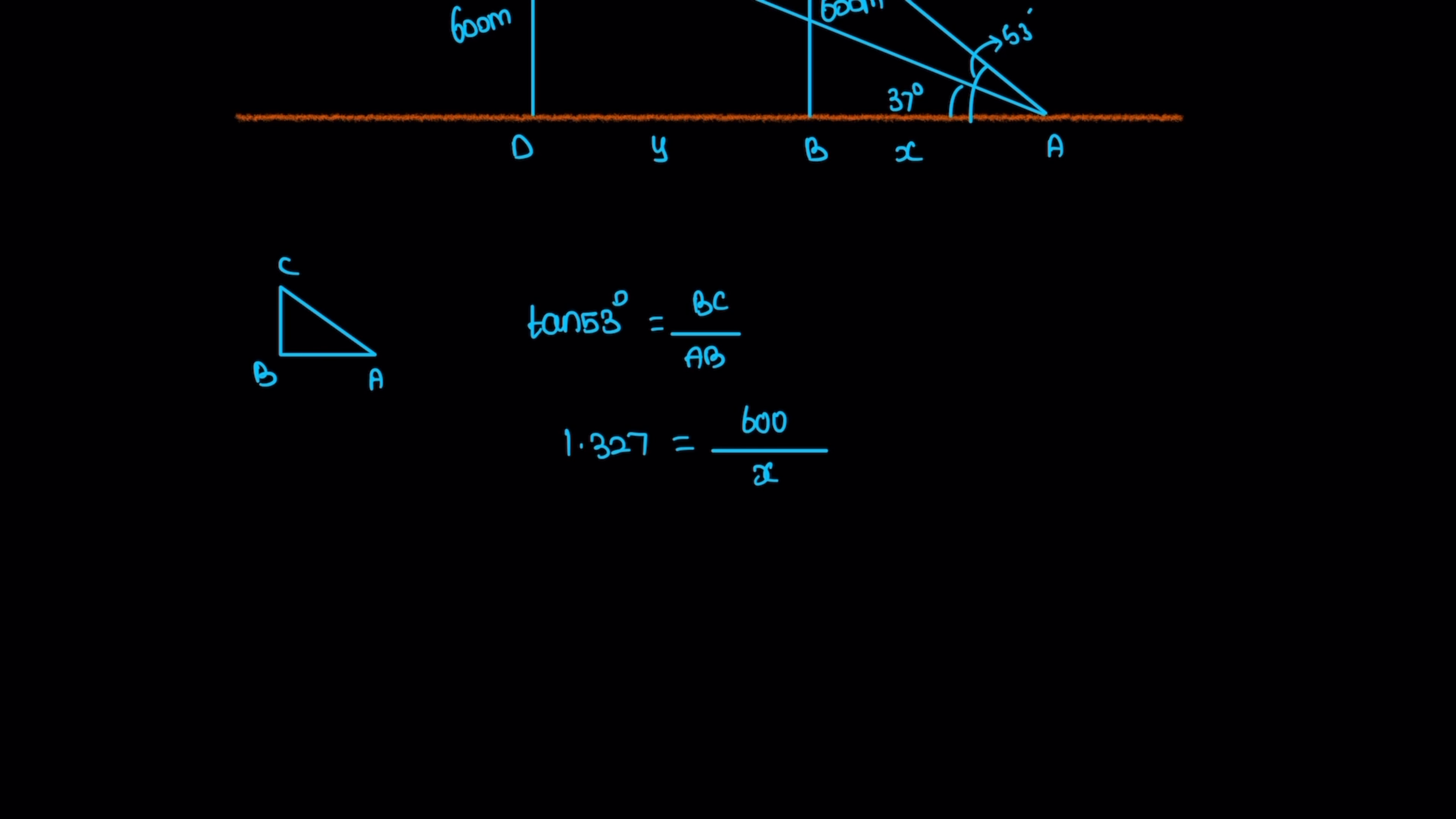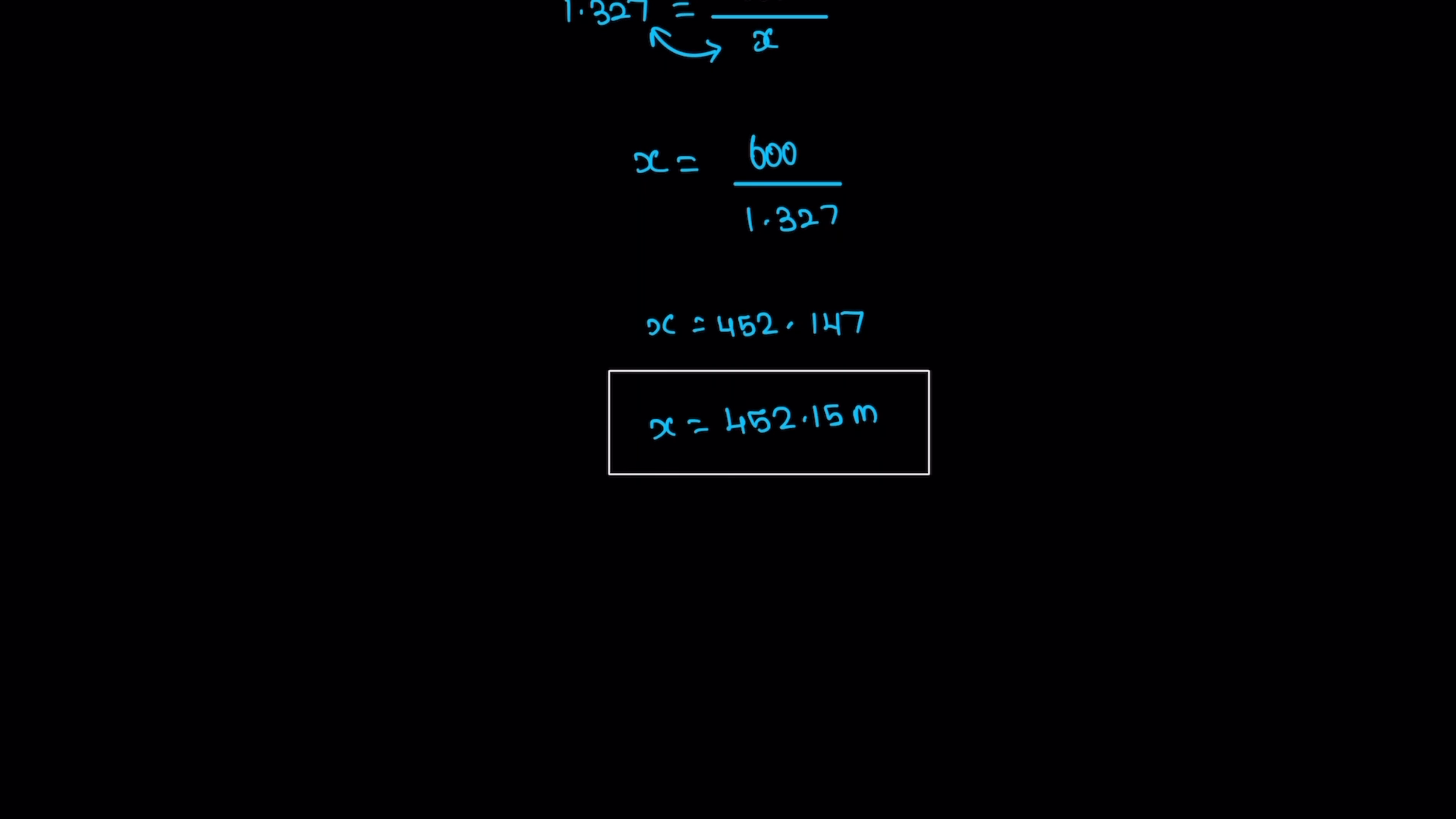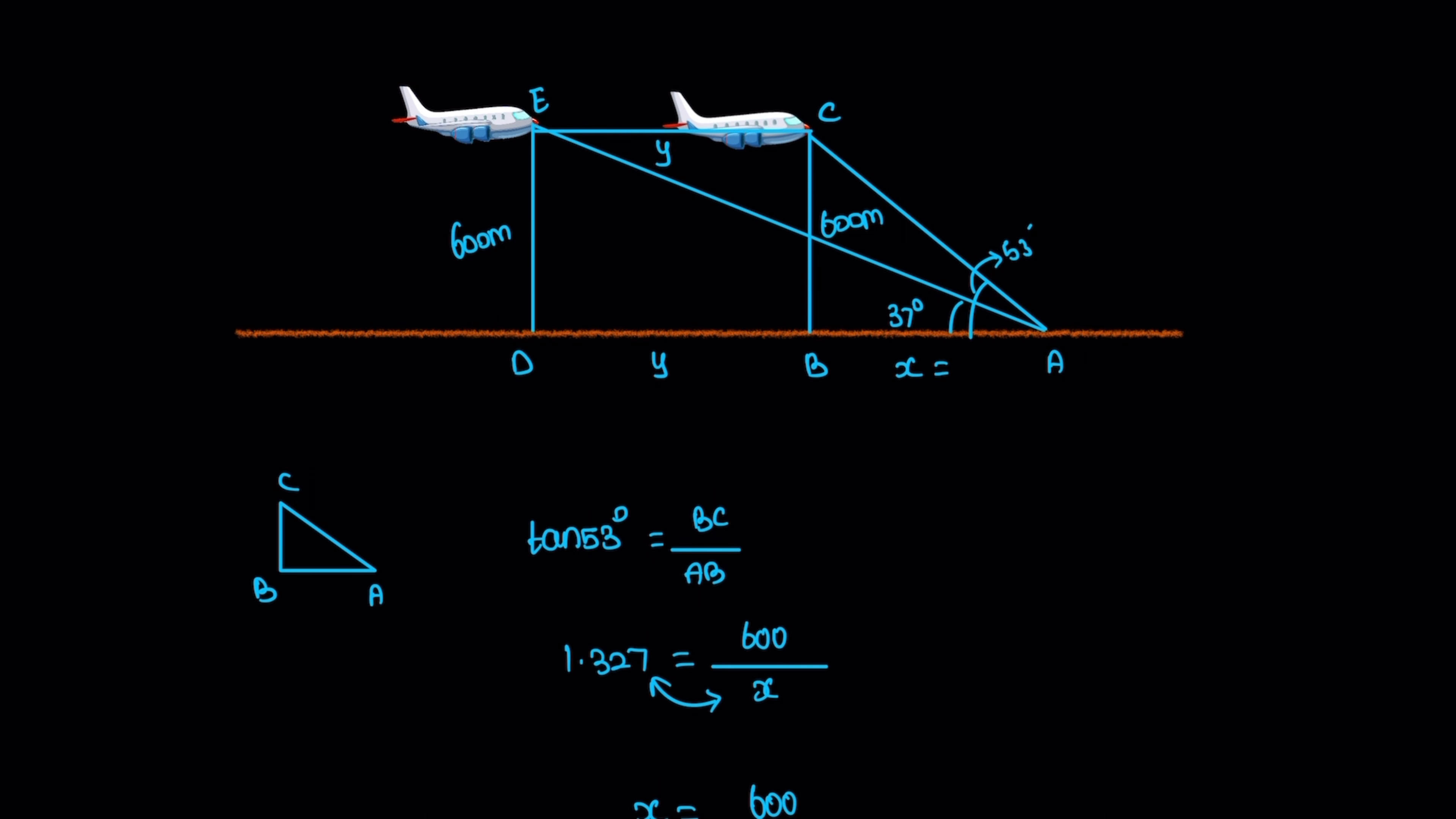X multiplied equals 600 divided by 1.327, which gives X equals 452.15 meters.